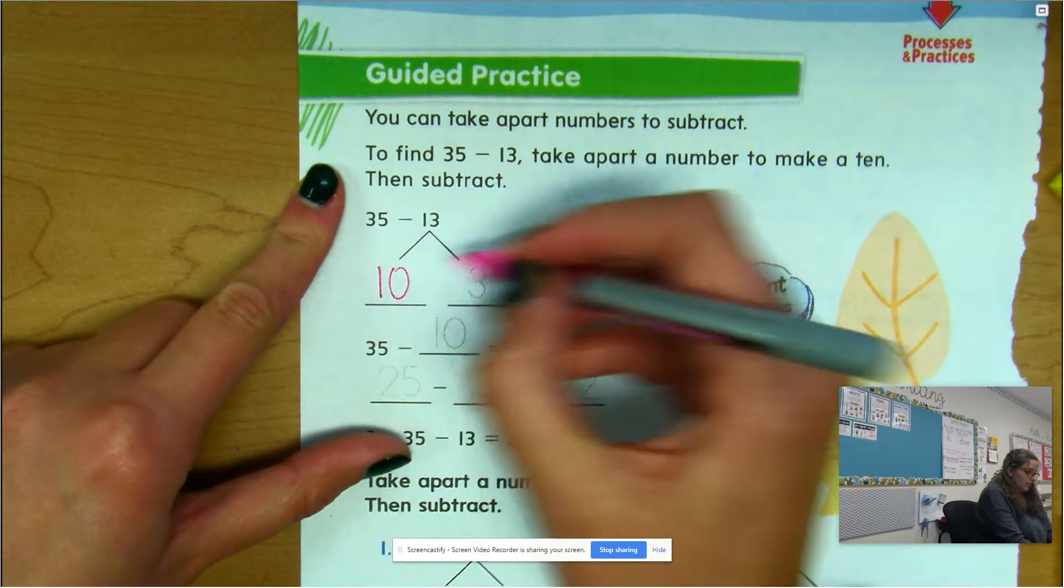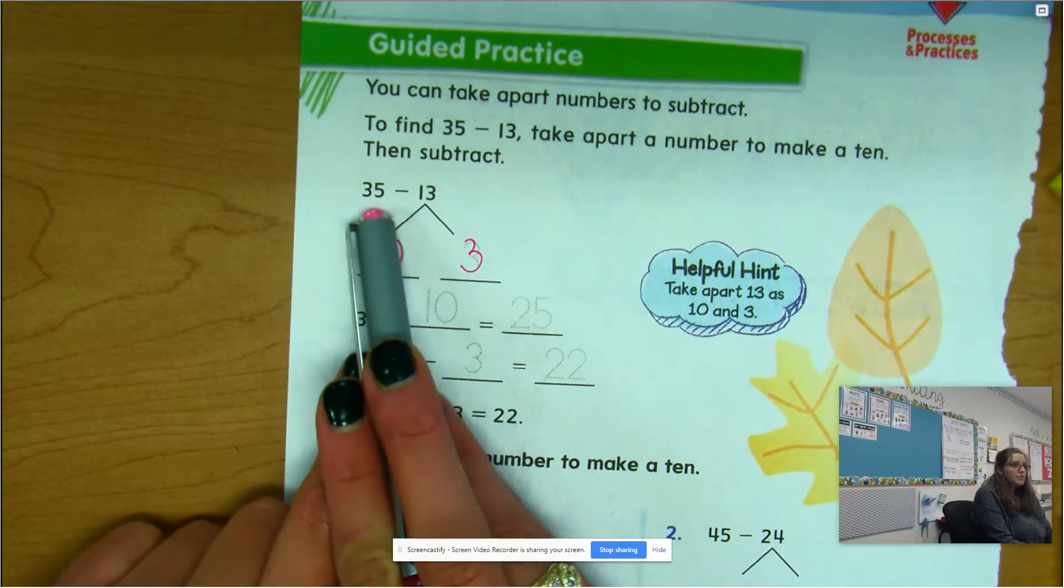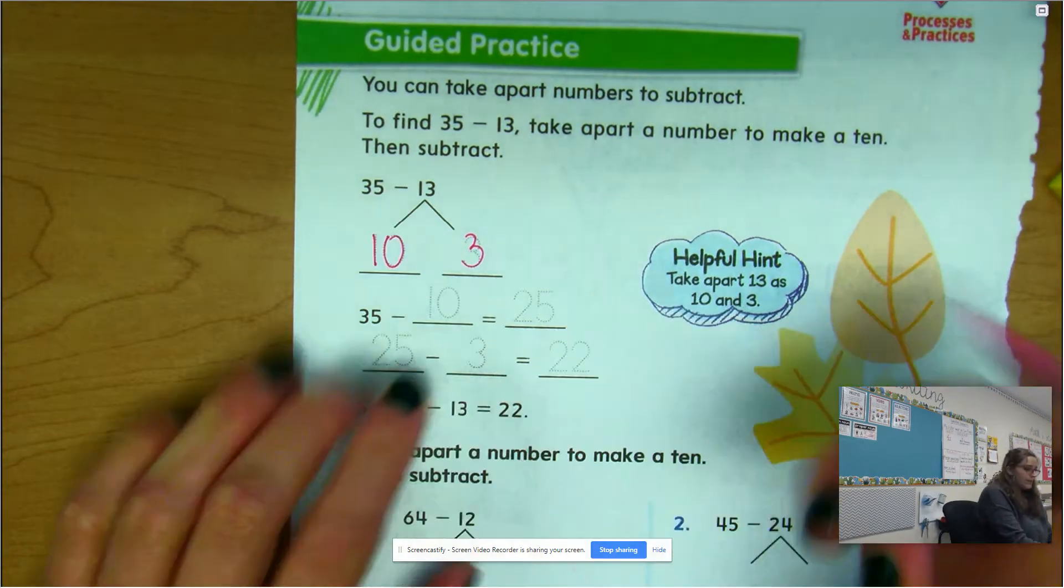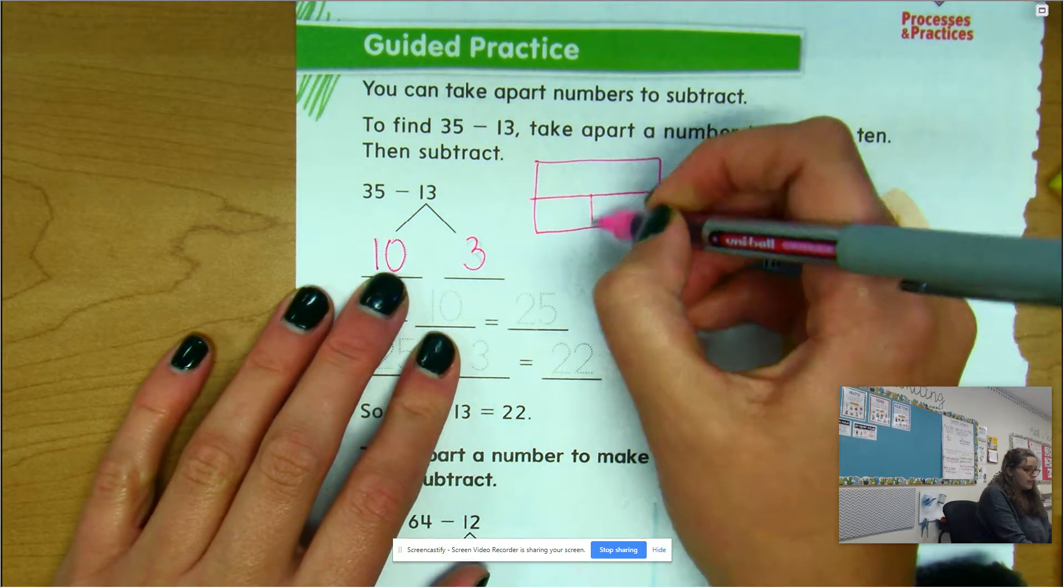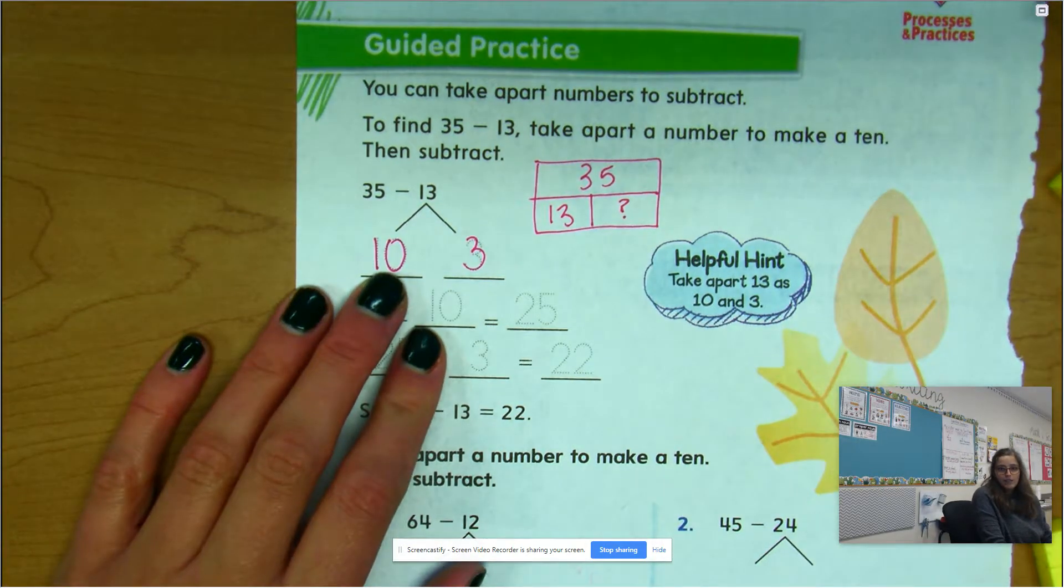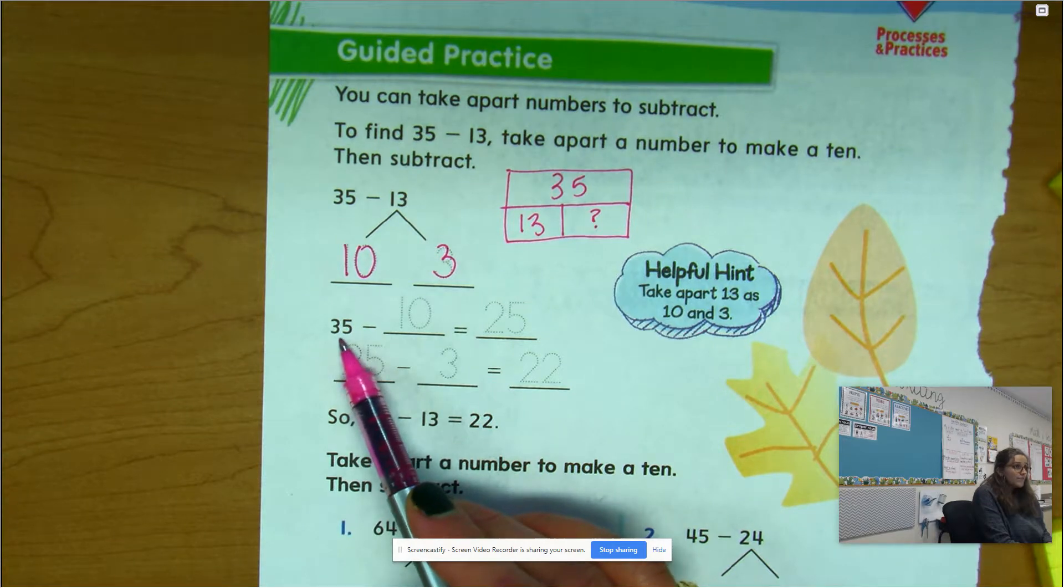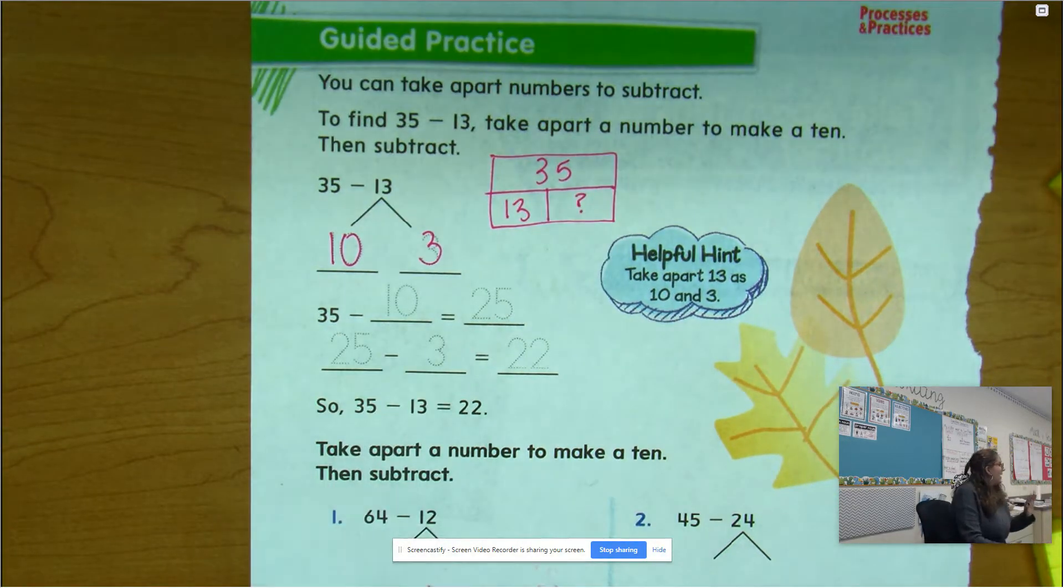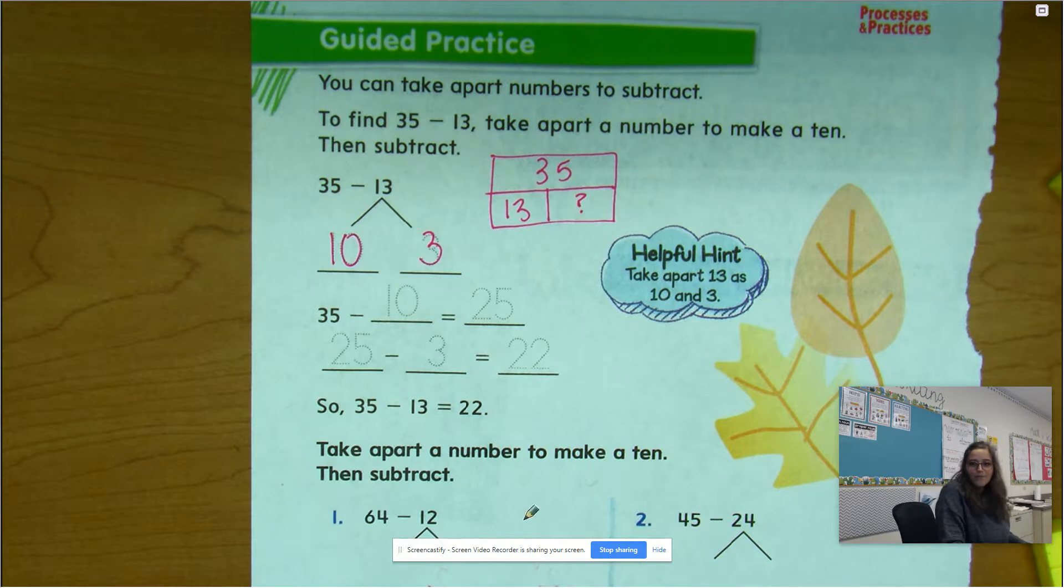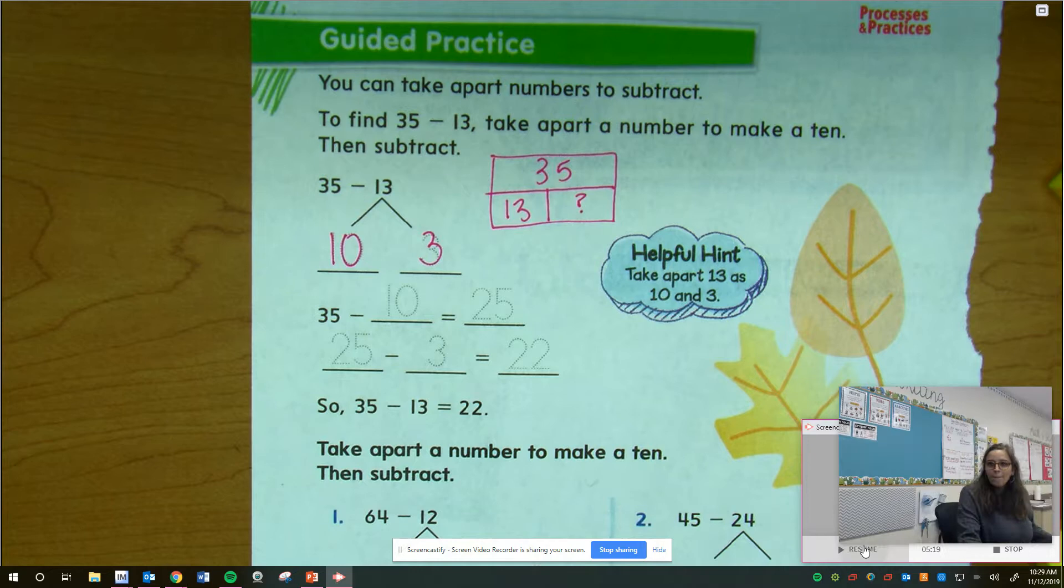The first thing I'm going to do is start with my number - that's the whole in my problem. This is our part-part-whole boxes. We're starting with a whole of 35, we're taking away 13, and we're trying to figure out how much is left. So I'm starting with the whole right here, and I'm going to take away the ten first.